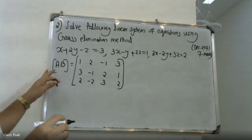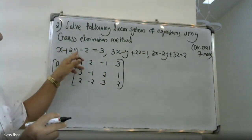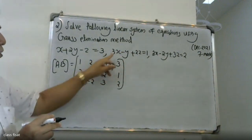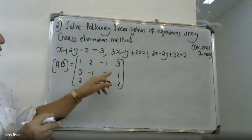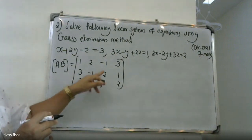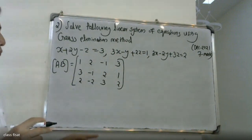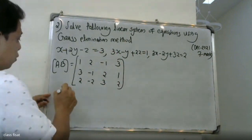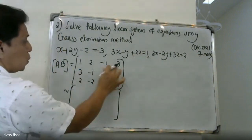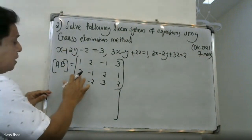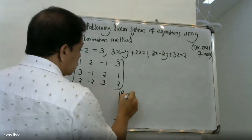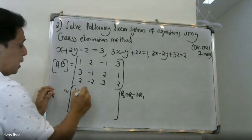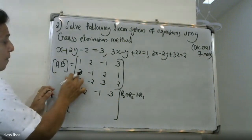So, if you write the augmented matrix, we apply the row operation. R2 changes to R2 minus 3R1. The first row is 1, 2, minus 1, 3. Second row: 3 minus 3 times 1 gives 0.